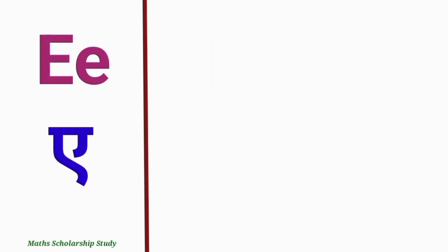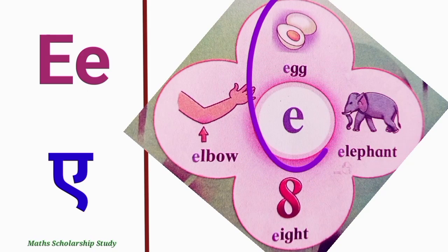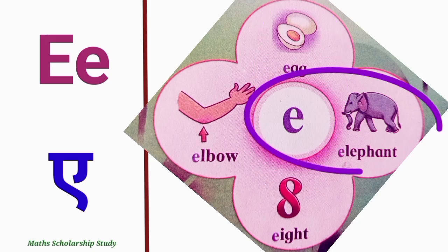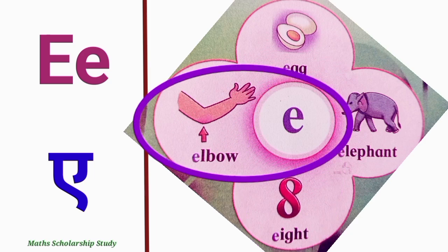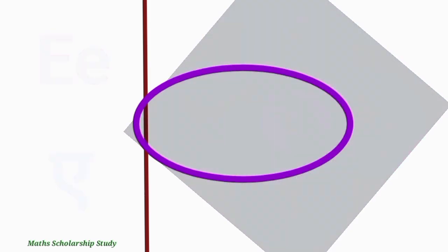Letter E. E for egg, E for eight, E for elbow.